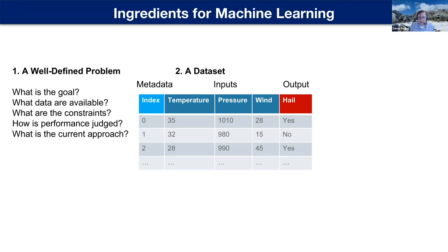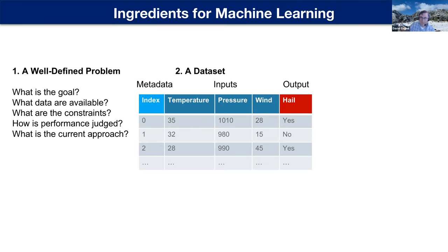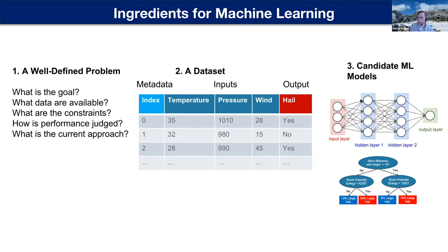Next, you actually need a dataset. Most machine learning datasets look like some kind of data table. We have metadata — data that describes the example but isn't used directly in prediction, like a date, location, time, or person's name. We also have inputs — in the weather field things like temperature, pressure, wind. And then the output is what we're actually trying to predict: a yes or no on hail, or what color is the car. We have candidate machine learning models — there's usually more than one that might fit the problem, so we pick a few that seem suitable, test them, and pick the best one.